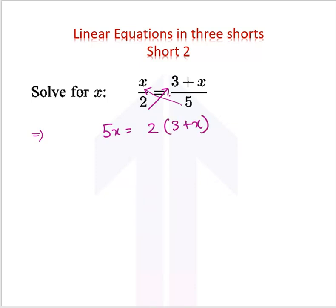You have to multiply 2 with the entire 3 plus x. So I have 5x is equal to 6 plus 2x. Now put the like terms together.